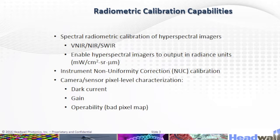The radiometric calibration capabilities include spectroradiometric calibration of hyperspectral imagers — the VNIR, near, and SWIR — enabling the hyperspectral imager to output in radiance units.